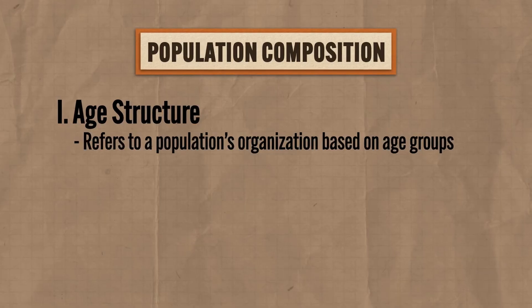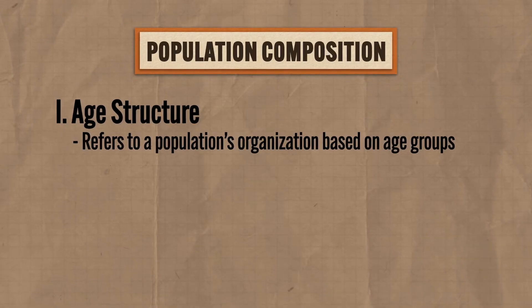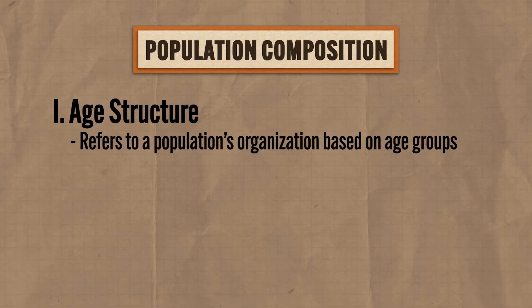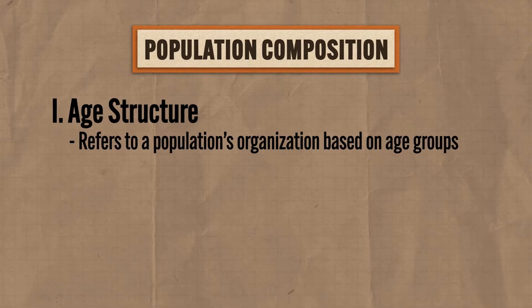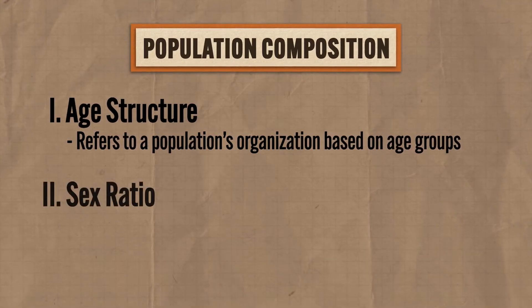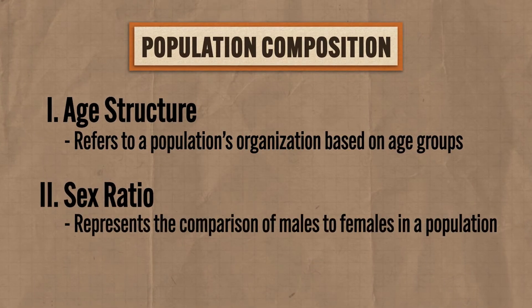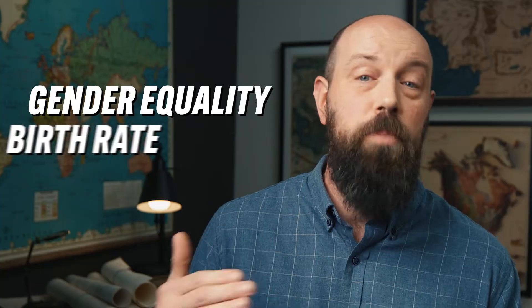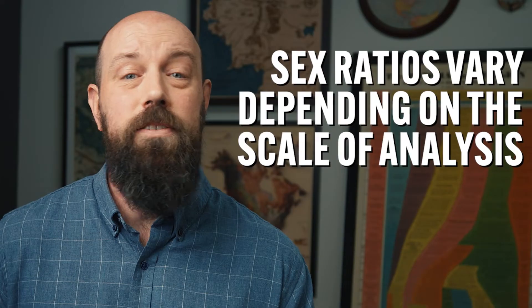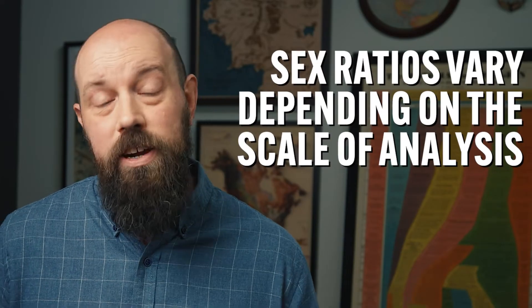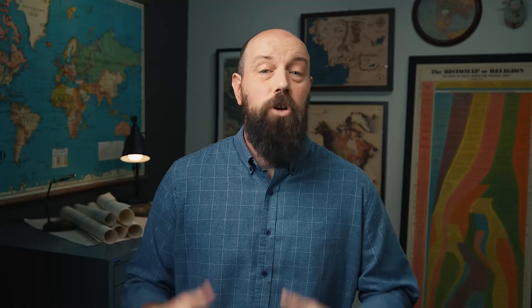So age structure is one ingredient in the population composition stew, and now let's consider the second ingredient: sex ratio, which represents the comparison of males to females in a population. This is an important measure because it can tell geographers a lot about a population, like gender equality or the birth rate. And as you've probably come to expect, sex ratios vary depending on the scale of analysis.